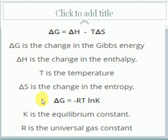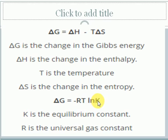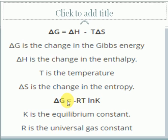Gibbs free energy can also be calculated using chemical equilibrium: ΔG = −RT ln K, where R is the universal gas constant, T is absolute temperature, and K is the equilibrium constant. The Ellingham diagram applies this concept because the reduction of metal oxides involves both forward and backward reactions taking place simultaneously.